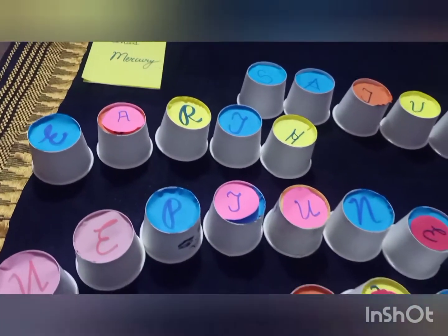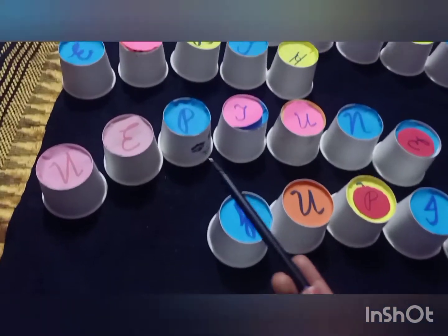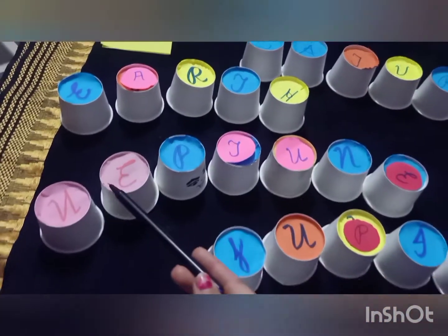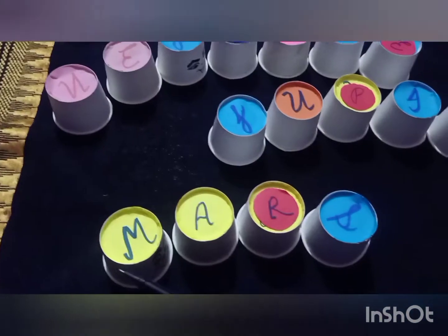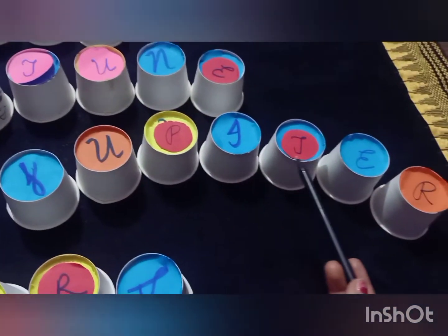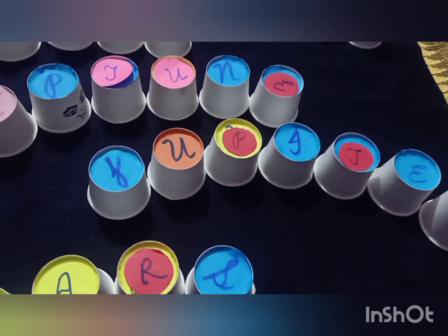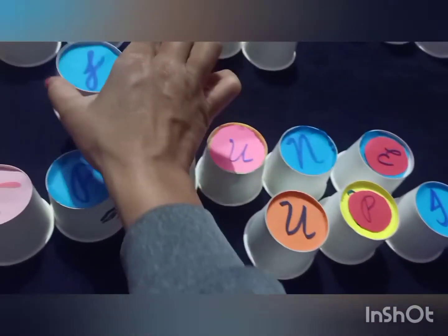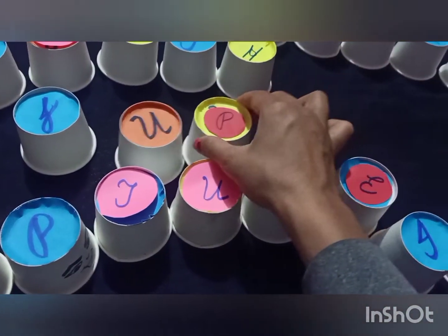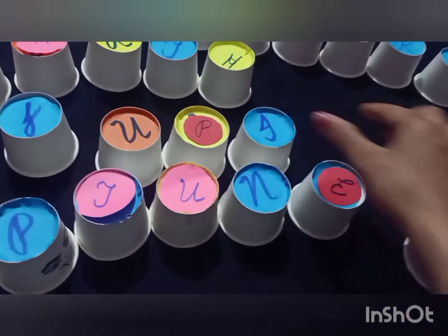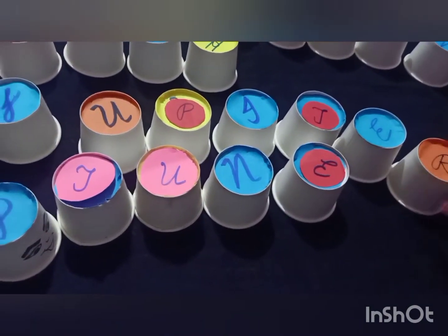In second place, we will check: is there any planet starting with F? No. G? No. H? No. I? No. J? Yes — Jupiter, J-U-P-I-T-E-R. Now we will arrange it in the second position.